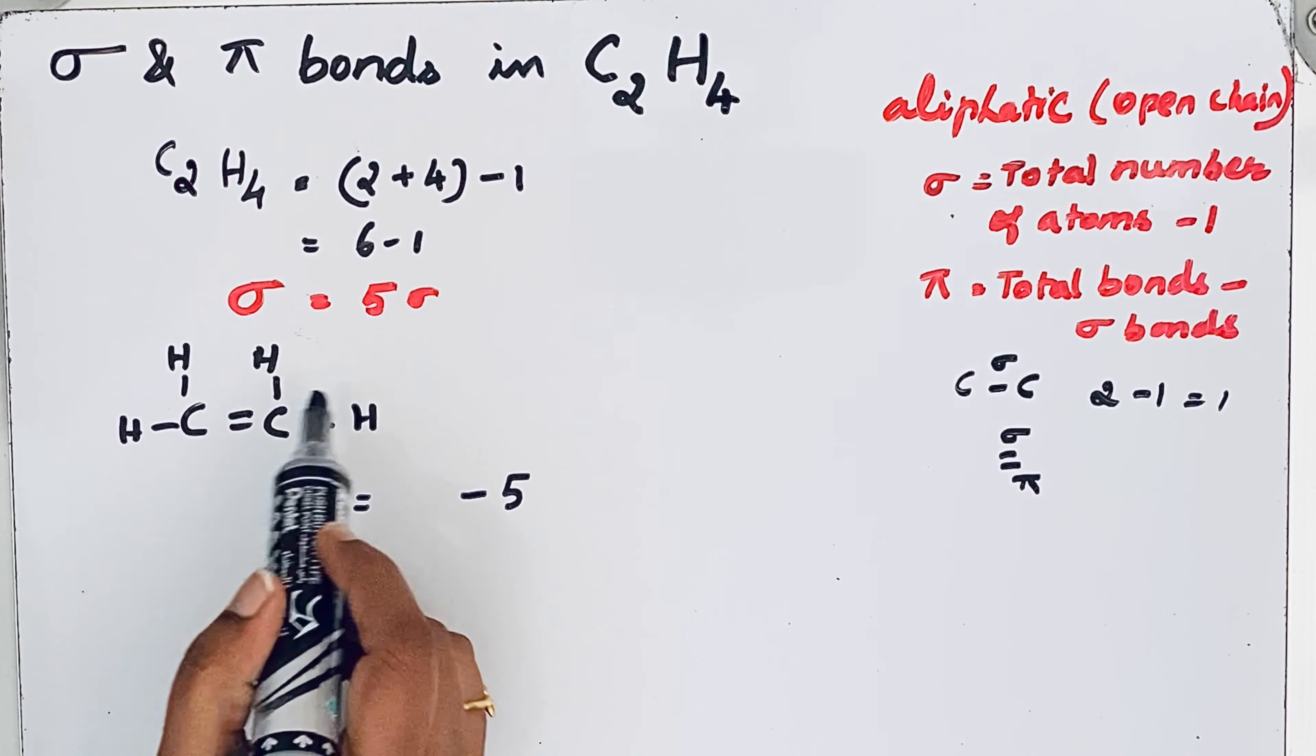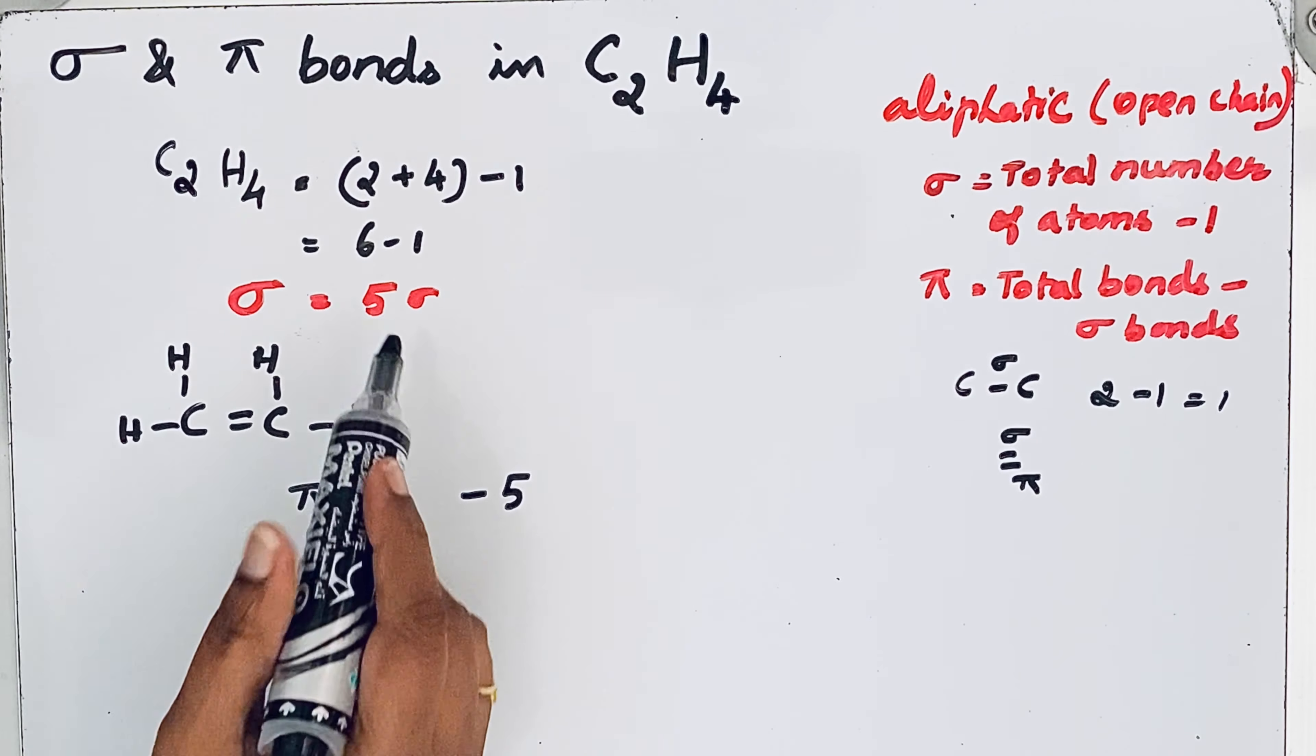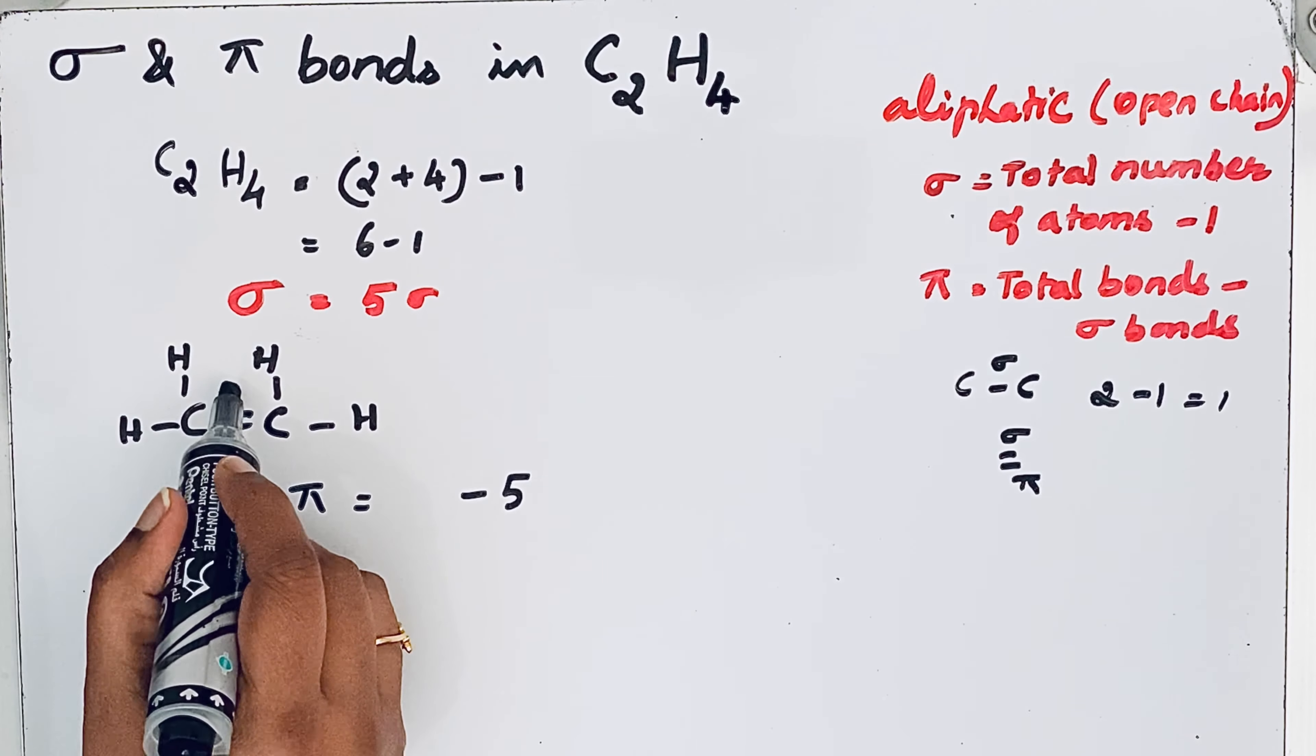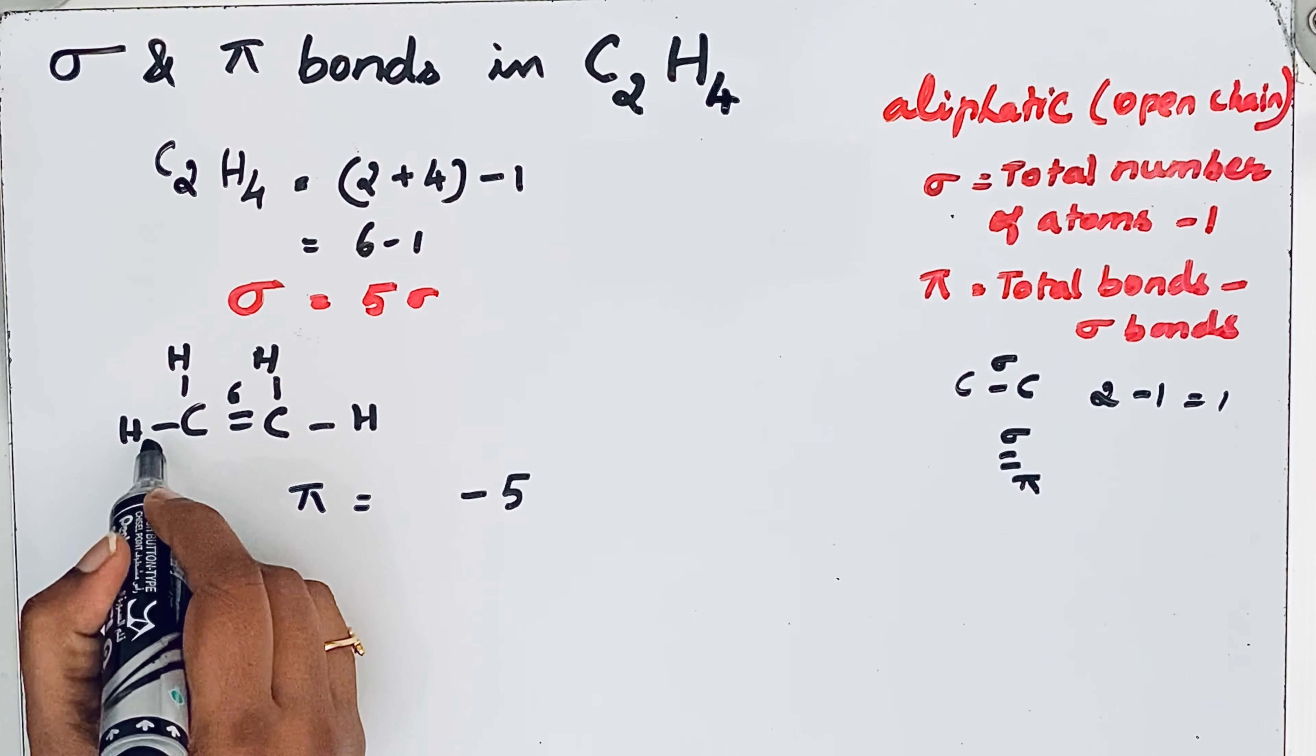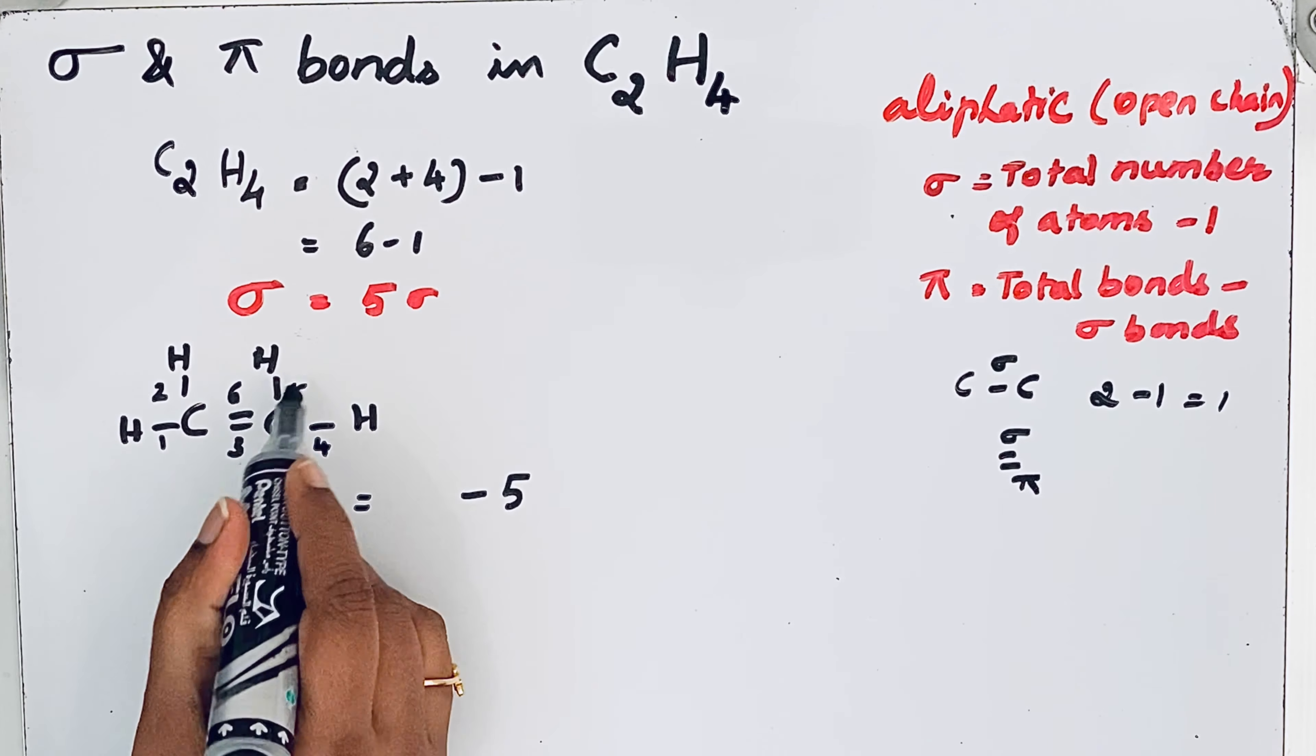To find the total number of bonds, wherever we see a double bond, we can calculate. So 5 sigma bonds, then this one is 6 because 1, 2, 3, 4, 5 and 6.